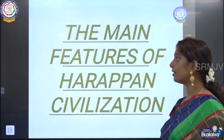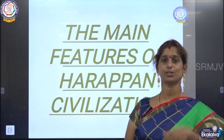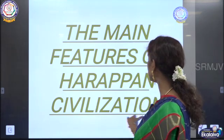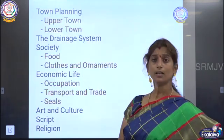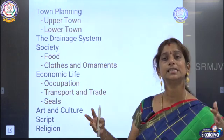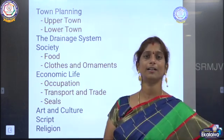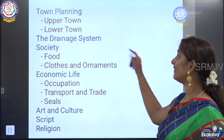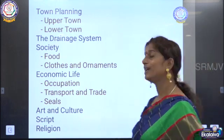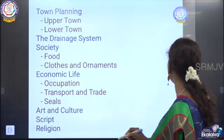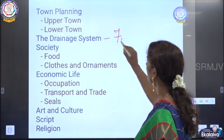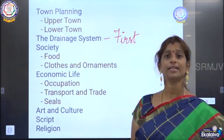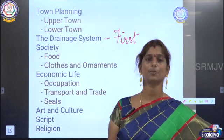We are now going to see about the main features of Harappan civilization. First comes the town planning, which means how the city was built. It was divided into two parts: one was about the upper town and the other was about the lower town. We are going to see about that and then the drainage system, which was first introduced in this Harappan civilization. And then about the society, the food habits, the clothes and the ornaments used by them.